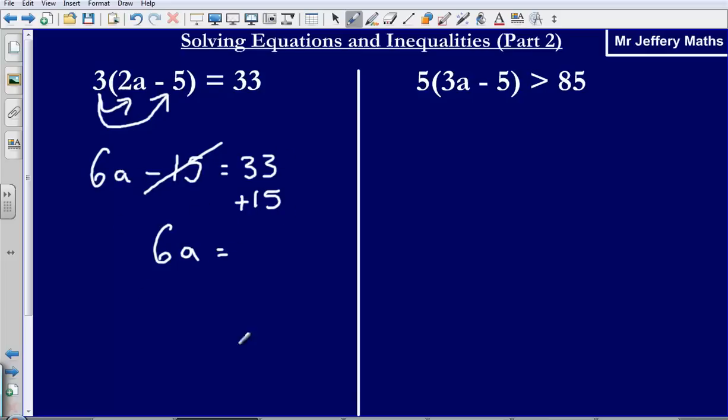And then I've got 33 plus 15, that's going to give me 48. At this point I'm trying to figure out what a is equal to. I've got 6 lots of a equal 48. So to find out what just one lot of a is, I just need to divide by 6.